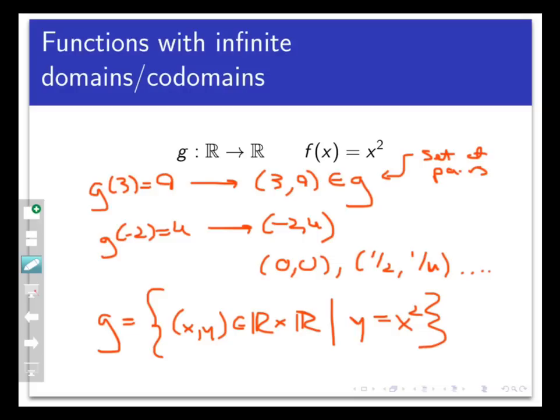And points that should not be in this function, like 1, 5, are excluded, because we know that g of 1 is 1 squared, and that's not equal to 5. And indeed, 1 comma 5 doesn't meet the entry requirements for this set.